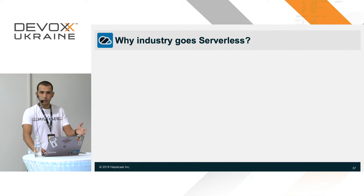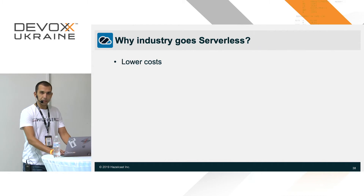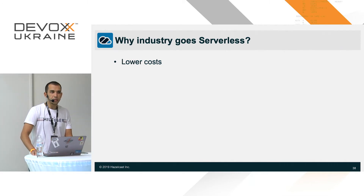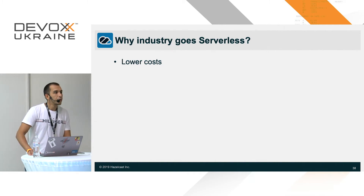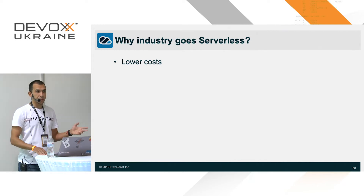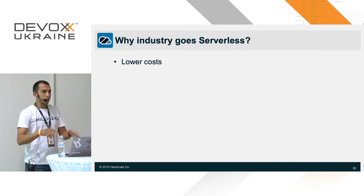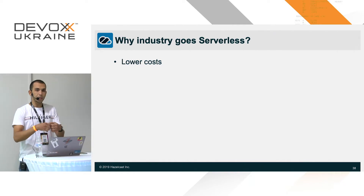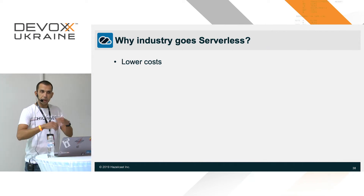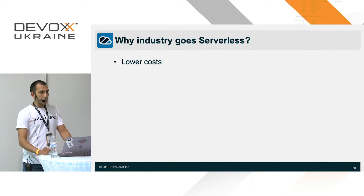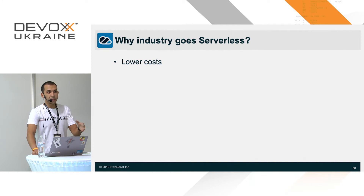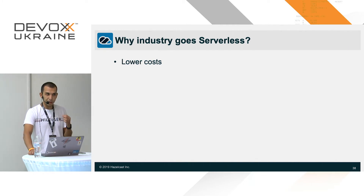Why is the industry going serverless? The first and most practical reason is lower costs. The most expensive thing in IT is engineers — I spoke with a friend running a startup who optimized their cloud spend from $300 down to $100 per month for infrastructure. Compare that to developer rates — it's incomparable. Serverless is also cloud-native: Lambda functions and backend services come with cloud discovery, high availability, fault tolerance, and monitoring built in.